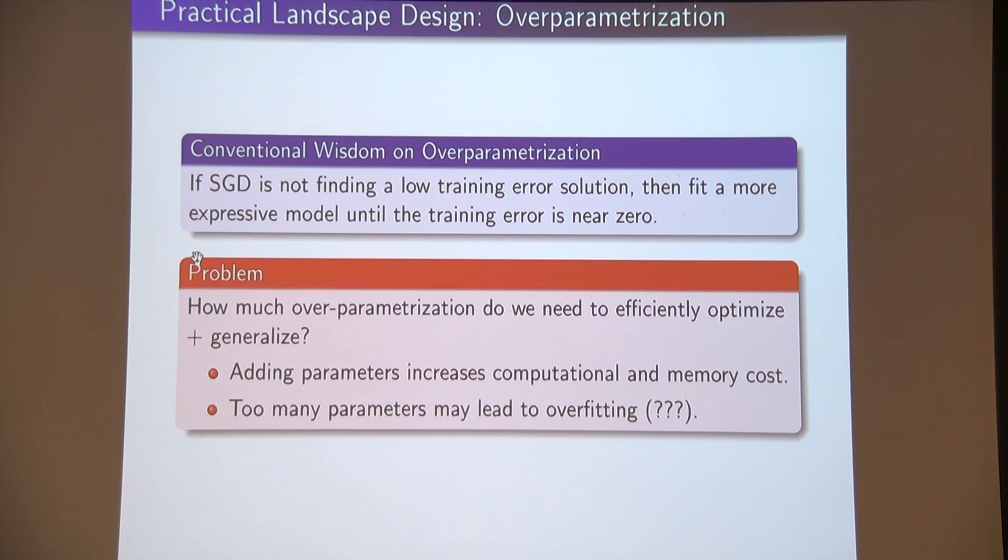Practitioners have known this forever. The first thing they try is when you're not getting low training error, besides tuning the optimization algorithm, is to use a more expressive model, until you can at least get the training error small. Of course, this makes interesting computational questions: adding parameters increases computational memory costs. Our models need to fit on our phones and perhaps even smaller devices. And too many parameters may lead to overfitting. If you're trained as a statistician, the first thing you think is that roughly speaking, the amount of data points you need is at least linear in the number of parameters.